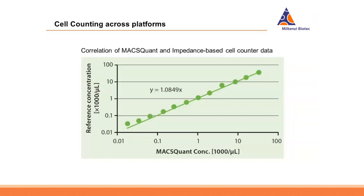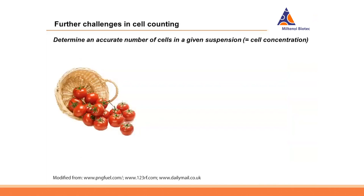The two instruments deviate in cell count by 8.5%, which limits overall accuracy because there is a systematic deviation between instruments based on their measurement principles. We can say that whenever we want to correlate data from both instruments, we either divide the impedance-based counter data by 1.085 or multiply the MaxQuant data by 1.085, making the numbers directly comparable — with the exception of ranges where the impedance-based counter cannot follow.